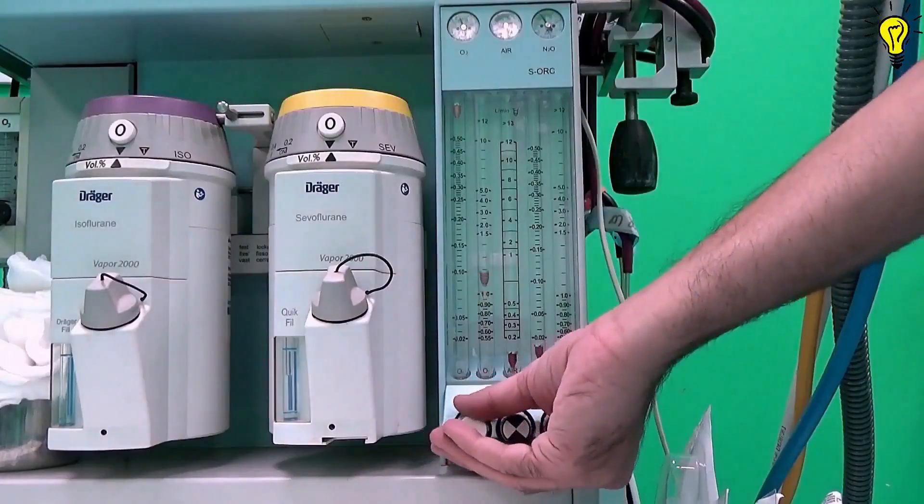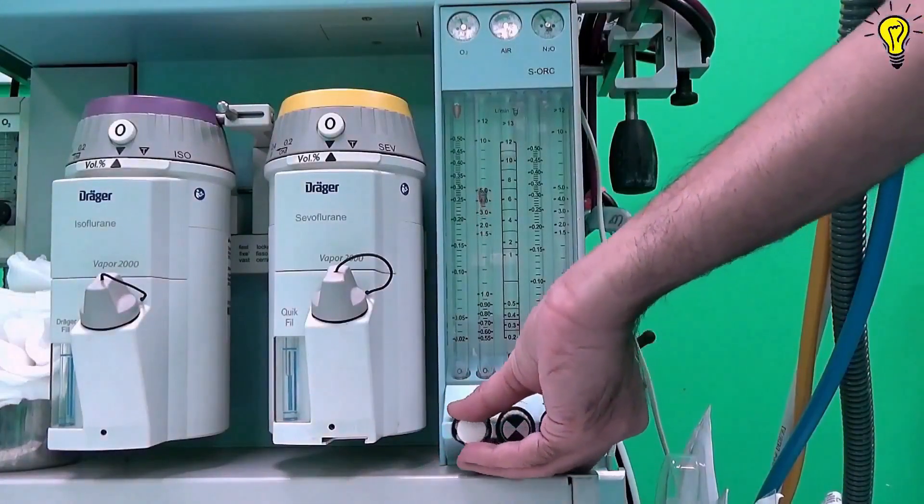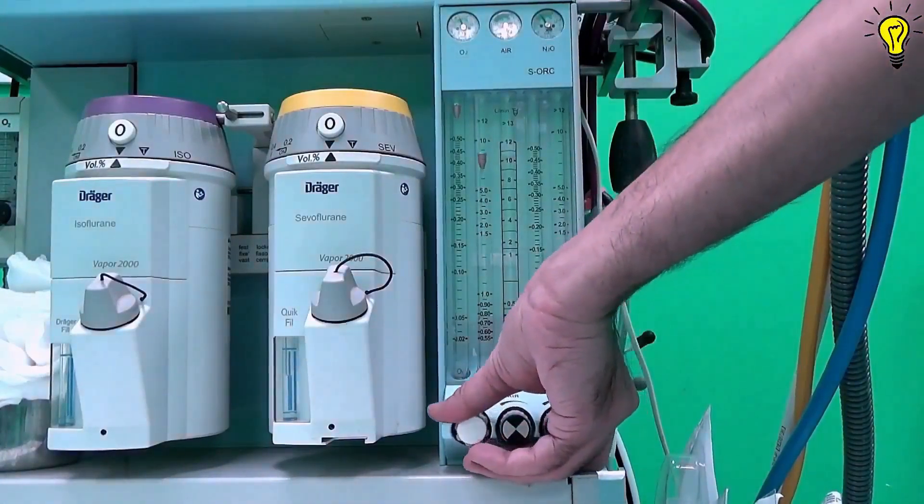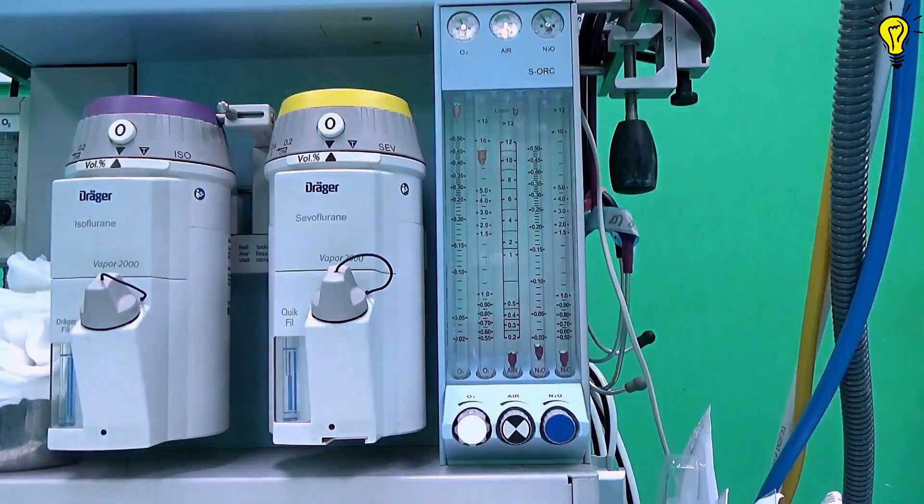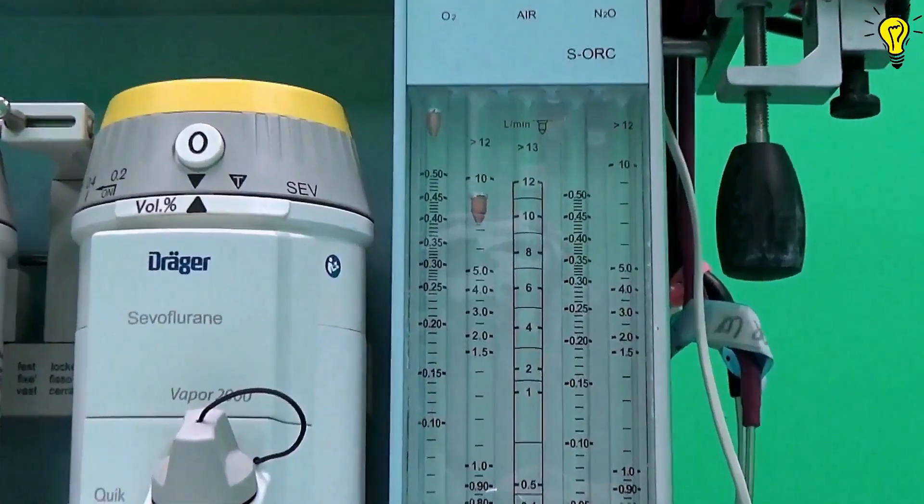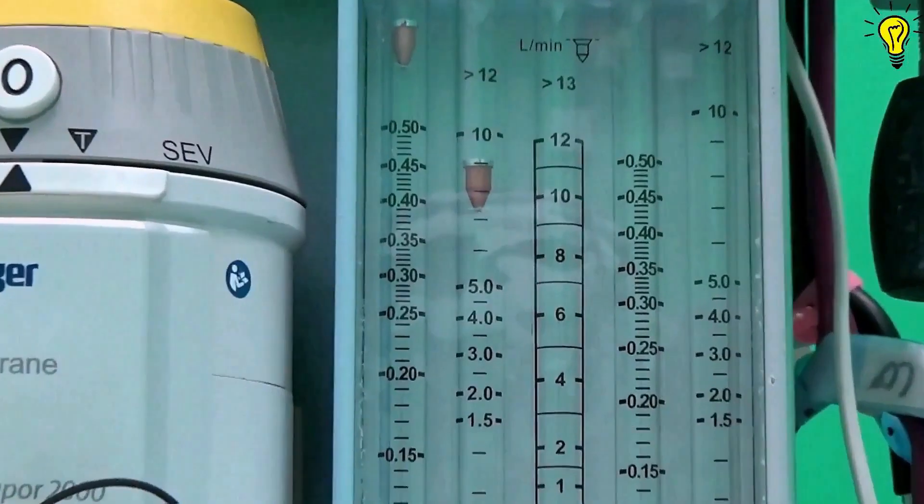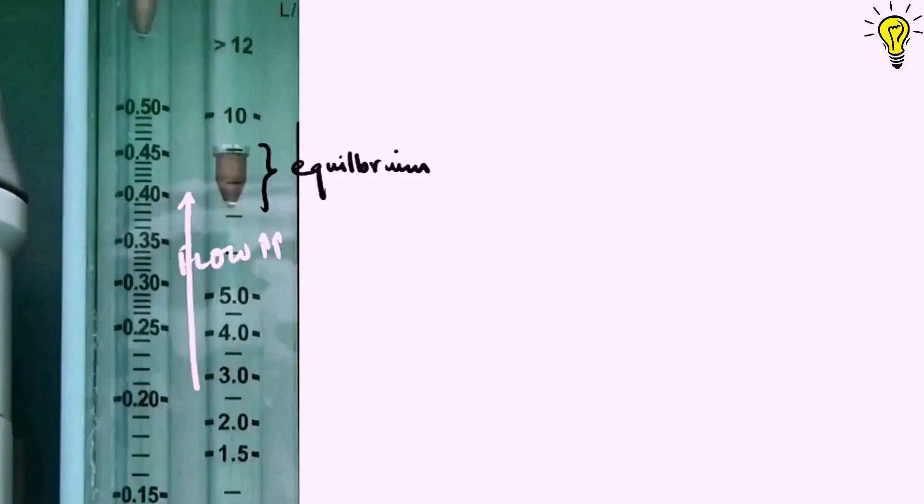Now if I increase the flow of oxygen, the float will move upwards assuming a new position. But it will again maintain its equilibrium where the two forces balance each other out. So you see the pressure drop against the float or across the float has remained constant. Only the position of float has now changed in the tube depending upon the force exerted by set flow rate against gravity. Hence it is called constant pressure.